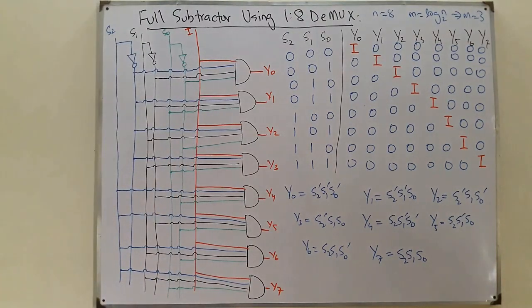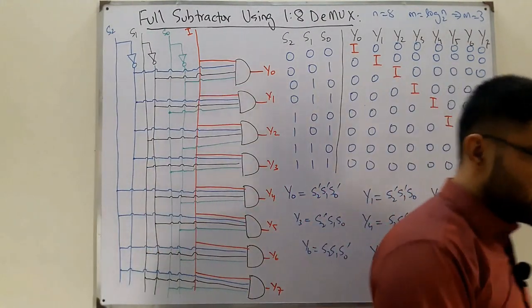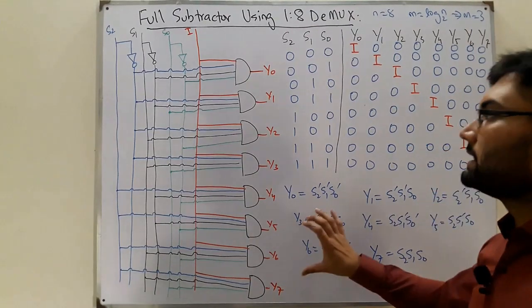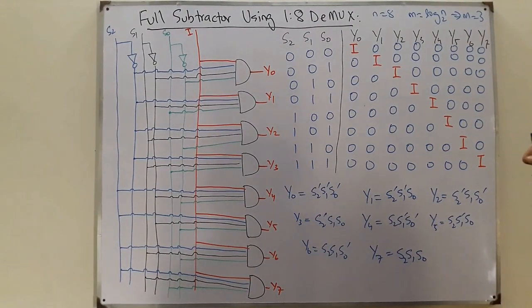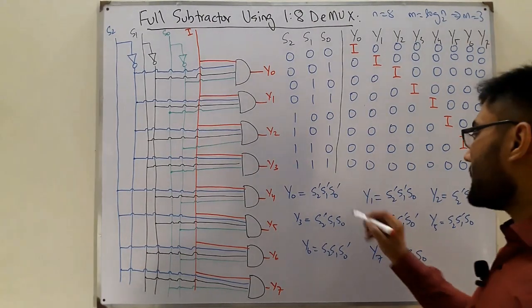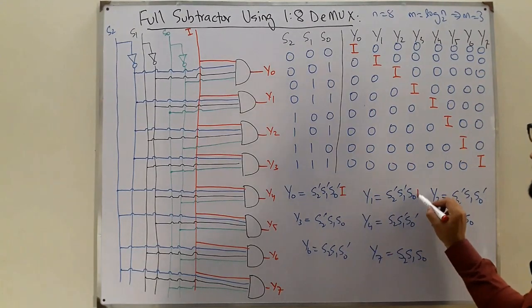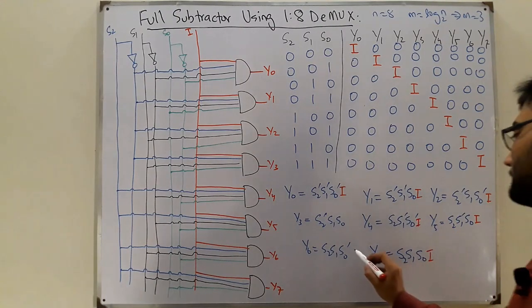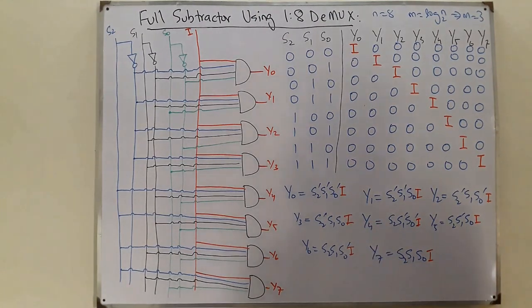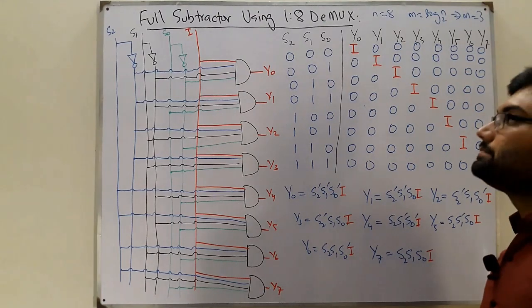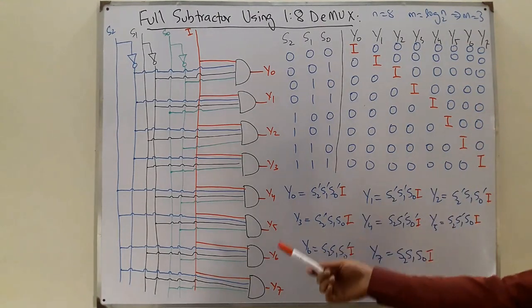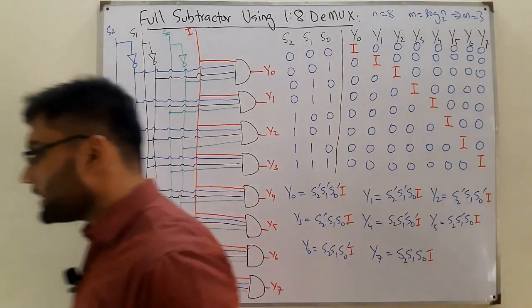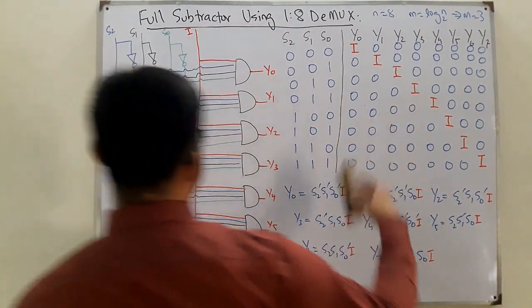I've drawn the 1×8 D multiplexer circuit. I paused the video to draw it — you can pause and check against yours. One thing I missed: the input I should be present in each gate. So we have the input I in all of them. This is the diagram for the 1×8 D multiplexer, not yet for the full subtractor.